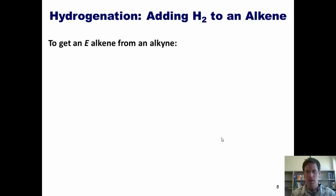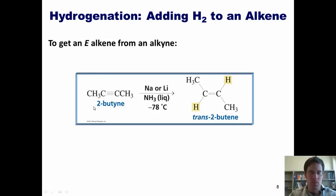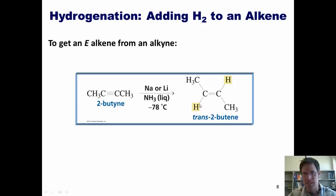So what if I don't want the hydrogens added to the same site—in other words, I want to get an E alkene? If I take my alkyne and treat it with sodium or lithium metal in liquid ammonia at low temperature, I can get my E alkene, in which the hydrogens have been added to opposite sides of the alkyne.